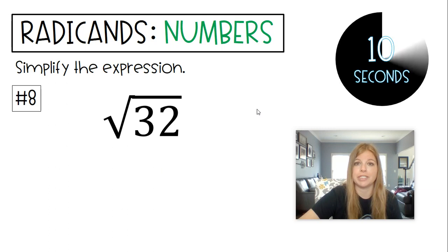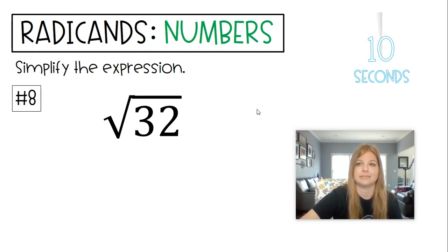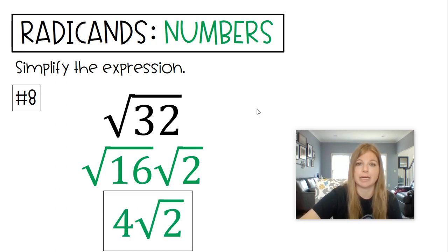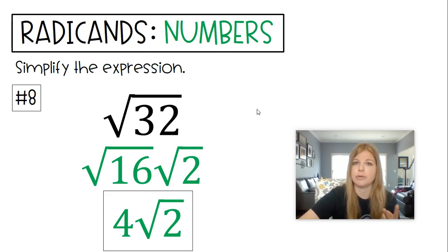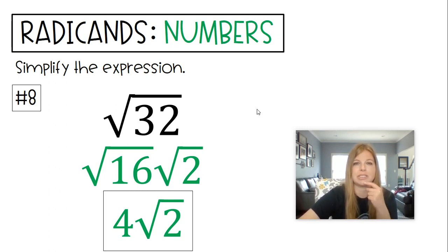Be careful on this one — Radical 32. The biggest perfect square is not 4, it's actually 16. Radical 16 times Radical 2, which becomes 4 Radical 2. If you were to break apart Radical 32 into Radical 4 times Radical 8, you can take the square root of 4, which is 2, but then you'd still need to break apart Radical 8 into Radical 4 times Radical 2. Eventually you'll still get the same answer of 4 Radical 2, but it'll just take more steps. So always think about the biggest perfect square that divides evenly.